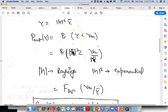So we will substitute the value of gamma as mod of h square times gamma bar. We get this.